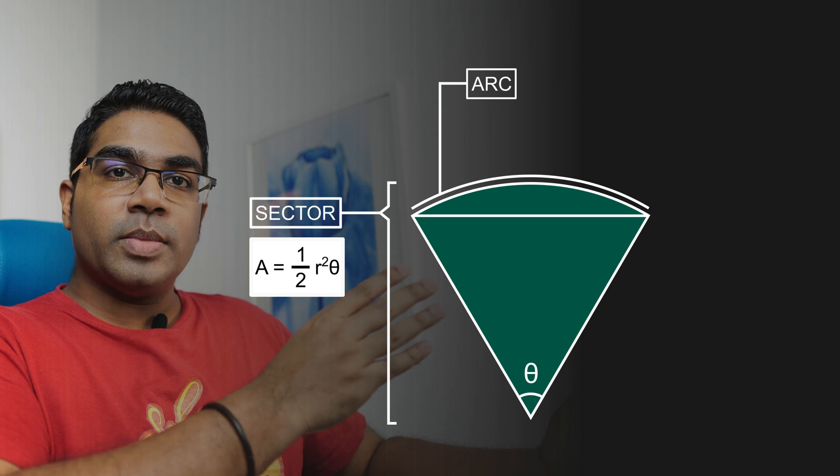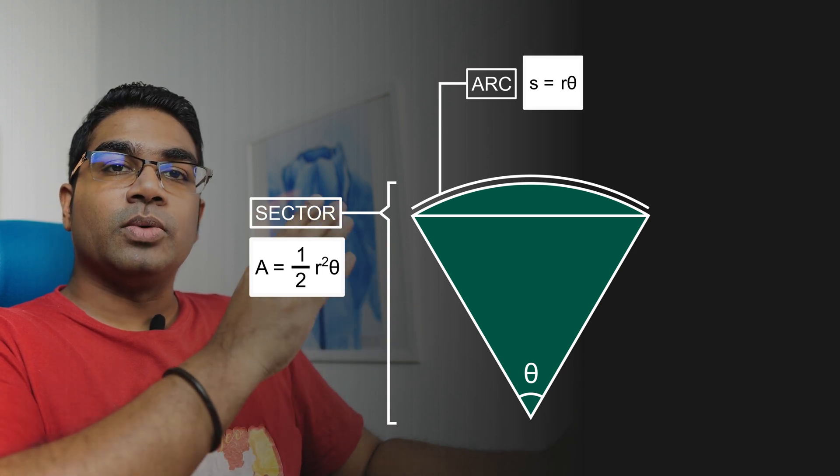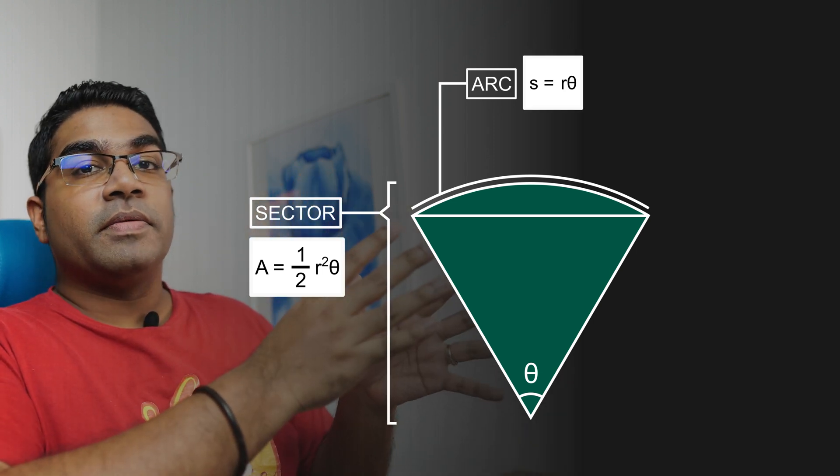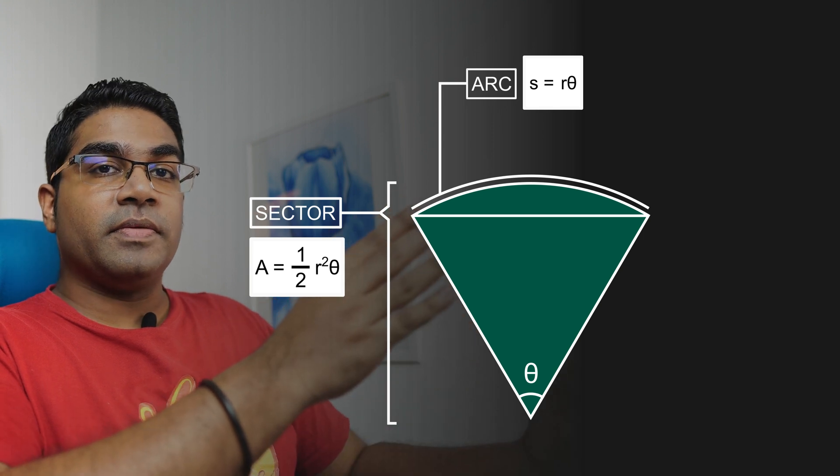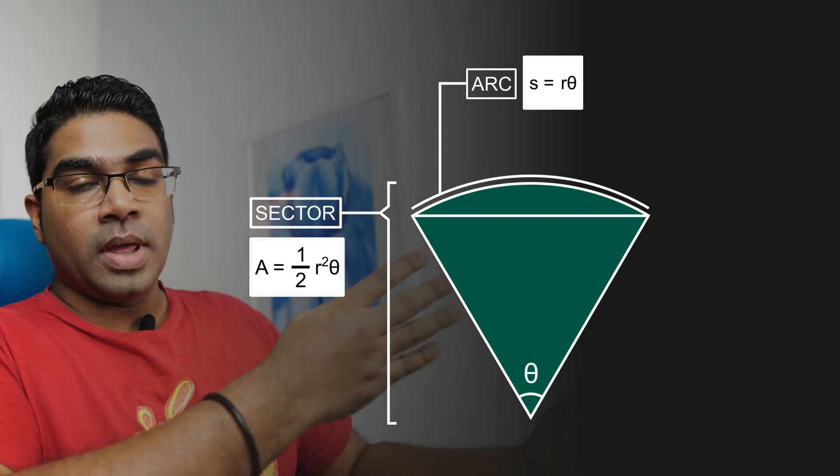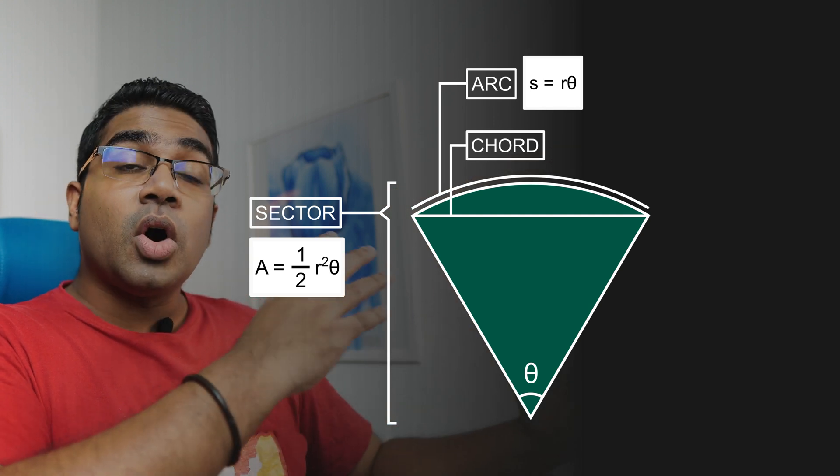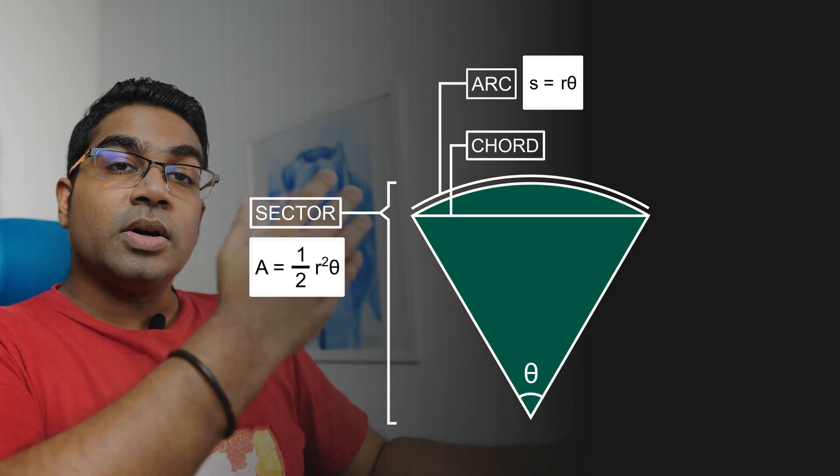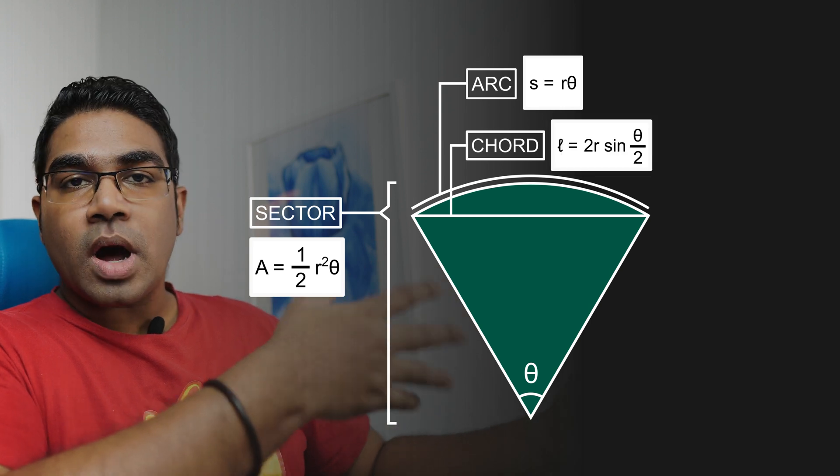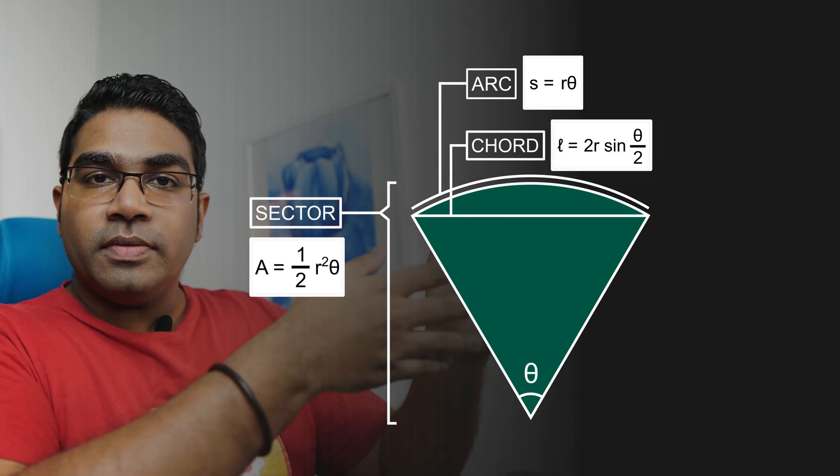This portion up here is called the arc of the sector. The arc formula is s = rθ. r here refers to the radius, θ refers to the angle as in the diagram. Then you can see this horizontal line here - this is known as the chord of the sector. The chord has a length of 2r sin(θ/2).